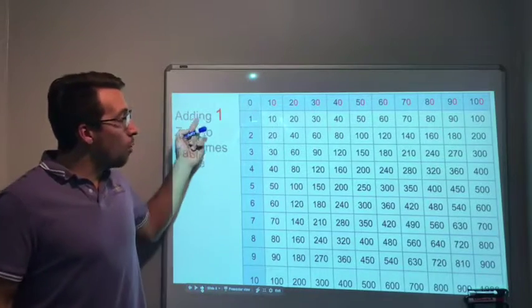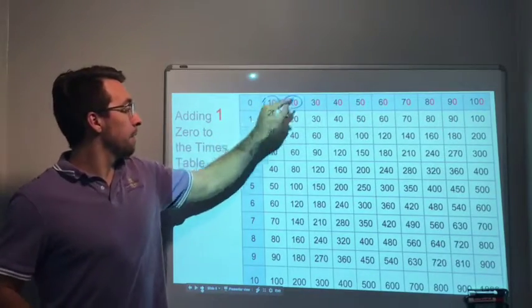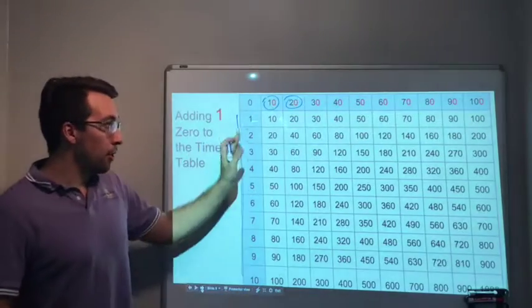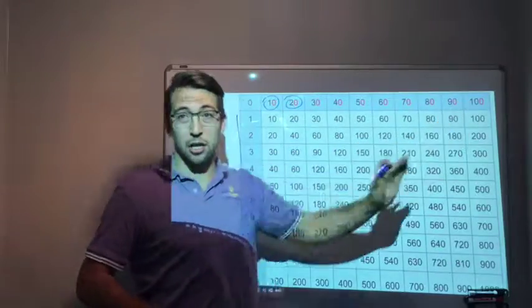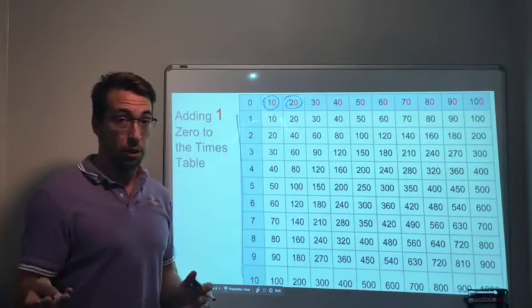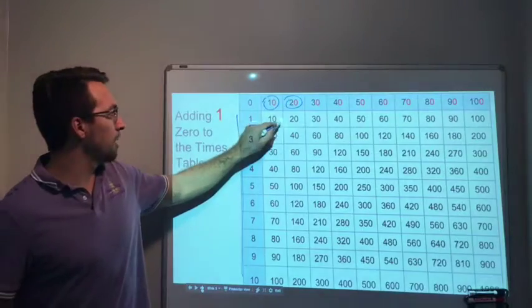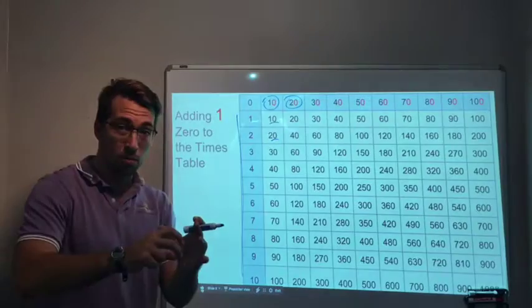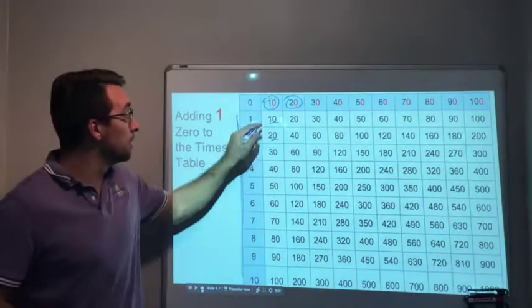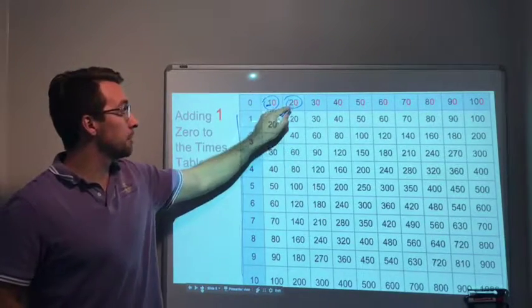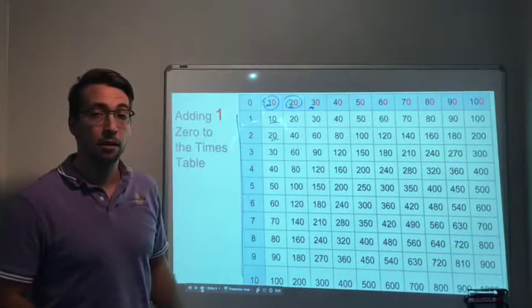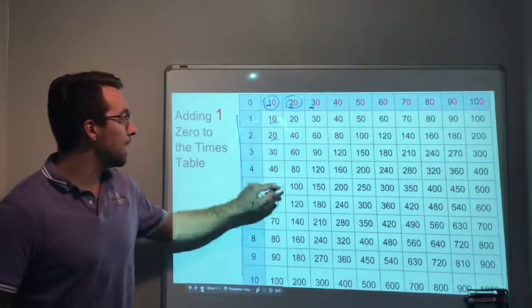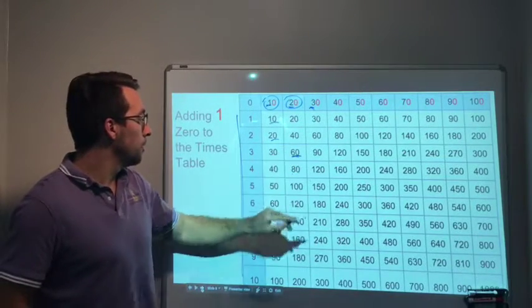Now this is what I want to show you: what happens when we add a zero. If we're going to add one zero, this is still 1 through 10 - nothing changed in the vertical column. But across the columns, we added one zero to each number. Look what happens: anytime you multiply by 10 or have a zero in the tens place, your product will have one zero.